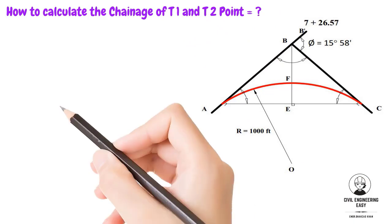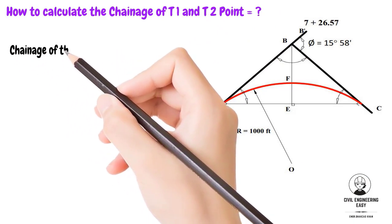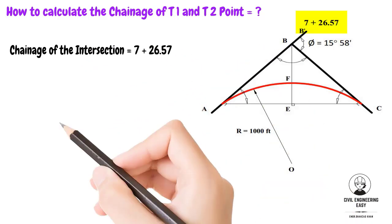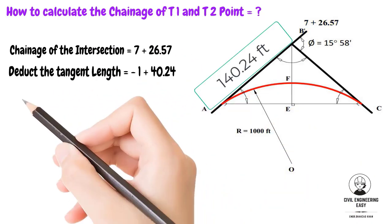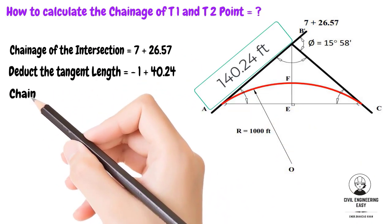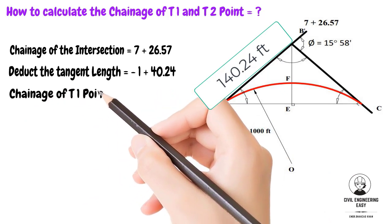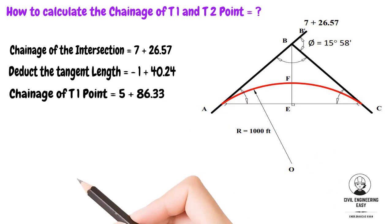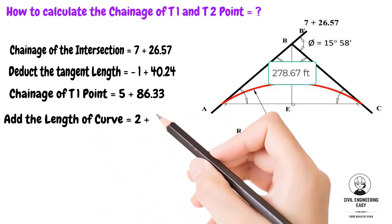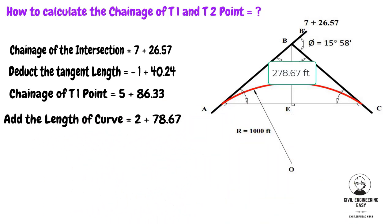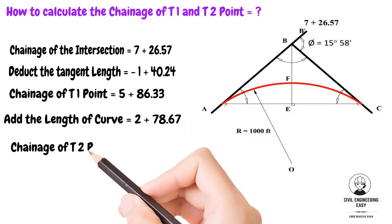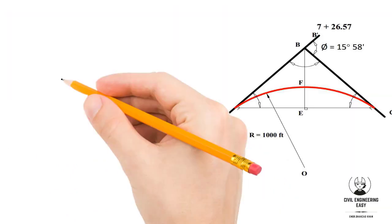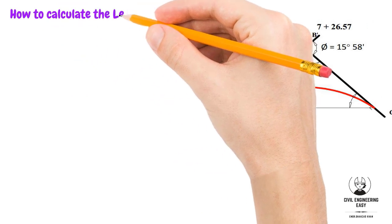Now we can find the chainage of tangent points T1 and T2. The chainage of the point of intersection is 726.57 feet. Subtracting the tangent length gives the chainage of T1 equal to 586.33 feet. Adding the length of the curve to that gives the chainage of T2 equal to 865 feet.